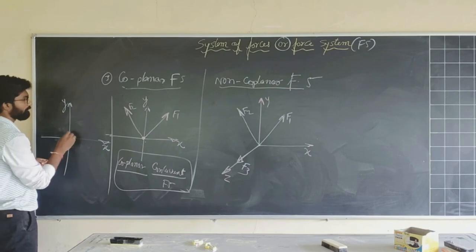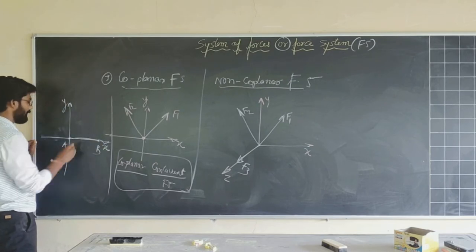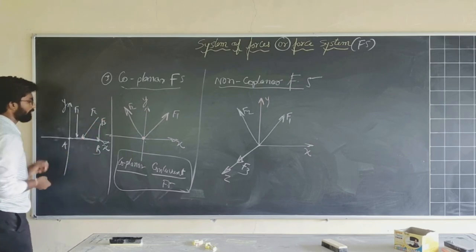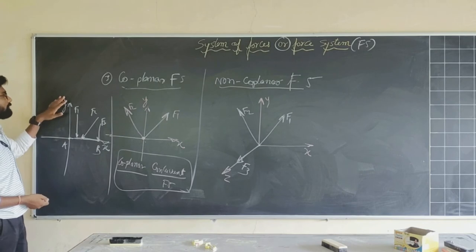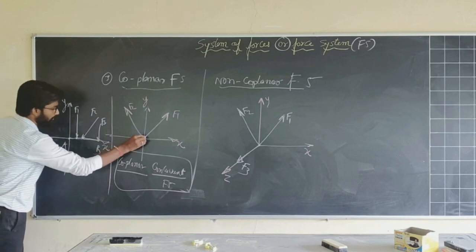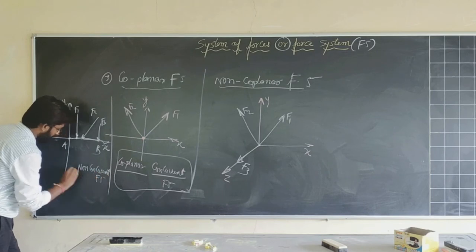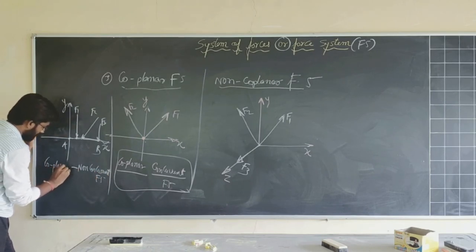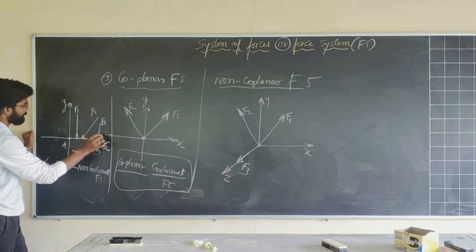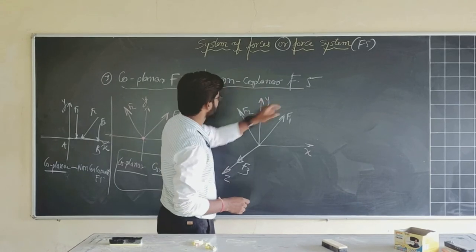For example, if we have a beam AB with forces F1, F2, and F3 acting at different points along it, this is studied in two axes x and y — making it coplanar. But since the forces act at different points of application, it is non-concurrent. So this is a coplanar non-concurrent force system.